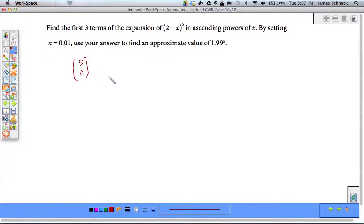So, we're not going to find the exact value. I'm just going to give an approximation by using part of this series. 5 choose 0 times 2 to the fifth times negative x to the 0. There's the first term.